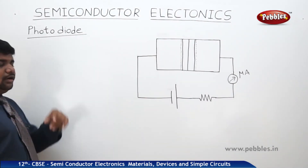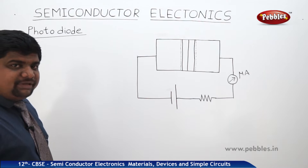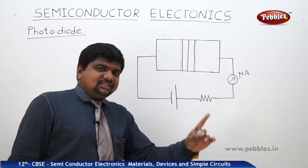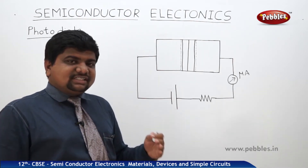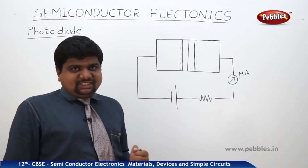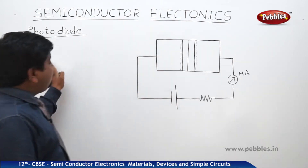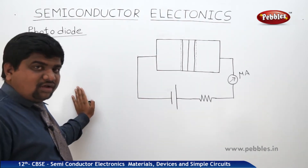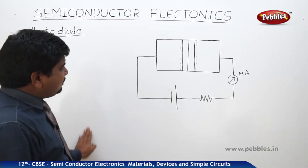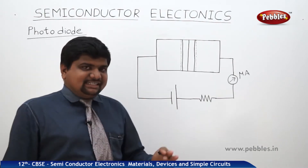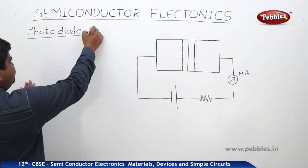This is one of the applications of a PN junction diode. We have already discussed the applications of PN junction diodes. Optoelectronic devices are one of the applications of PN junction diodes, and among those optoelectronic devices, the photodiode is one example.